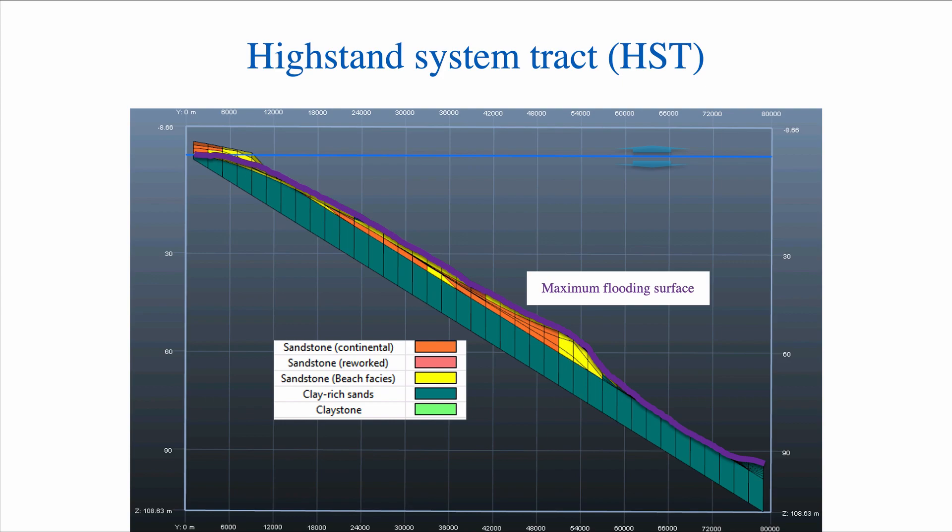For one thing, during the HST the rate of base level change is going to slow down and the rate of sedimentation is going to be either constant or higher. So you can expect some normal regression. The HST is characterized by progradation of sediment. That means that above the maximum flooding surface in the HST, we can expect some progradation and a normal regression.